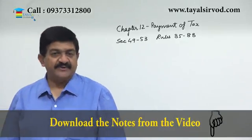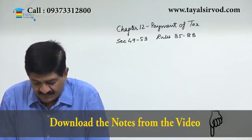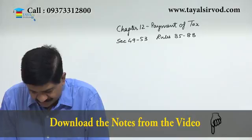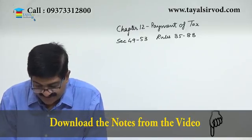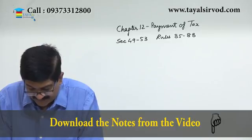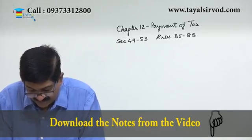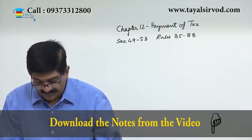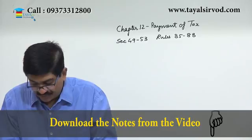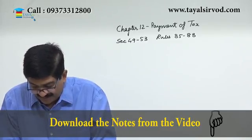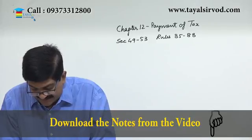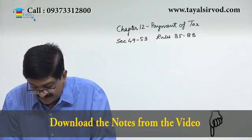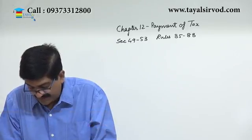The learning outcomes for this chapter are: first, describe three kinds of ledgers to be maintained by a taxable person — electronic cash ledger, electronic credit ledger, and electronic liability register. Second, analyze and apply the methodology of cross utilization of credit. Third, comprehend and apply the chronological order in which the liability of a taxable person has to be discharged. Fourth, identify and analyze the circumstances in which penal interest is levied. Fifth, understand the remedy available in case of tax wrongfully collected and paid to central or state government.